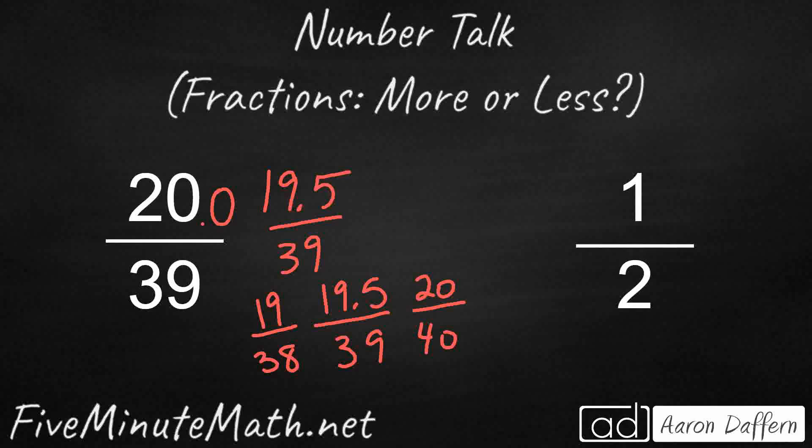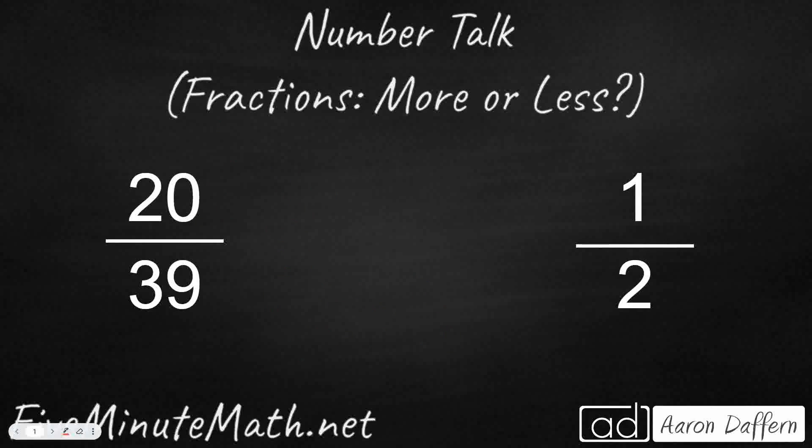So compare that with 20 and definitely 20 is bigger. It's a whole half bigger, a 0.5 bigger. So either way you look at it, we can say with certainty that 20 39ths is more or greater than 1 half.